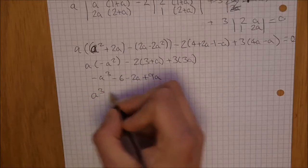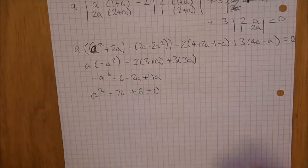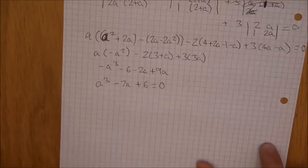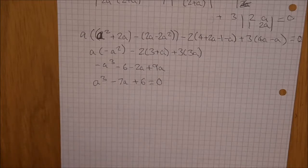So, a cubed minus 7a plus 6 equals to zero. Now, some of you are probably wondering, how on earth do we do that? Now, do you remember those factors that we used to do in call 1, where you had x plus 2 and you subbed it in and found whether it was a factor or not? That is what you do here.